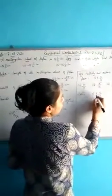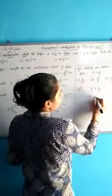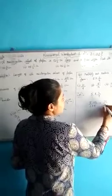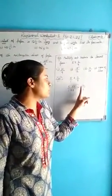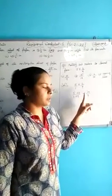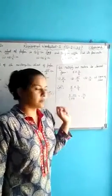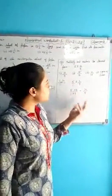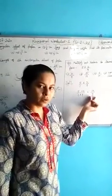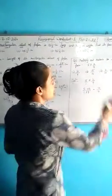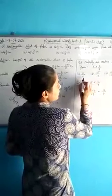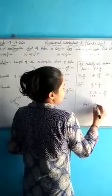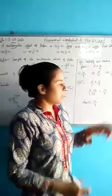So now, numerator multiplies with numerator and denominator multiplies with denominator always. 5 multiplied by 2 gives 10, divided by 9. Now to convert it to the lowest form, the numbers must be able to cancel each other, but 10 and 9 cannot be cut. So the lowest form of the given fraction is 10/9. Check which option it is — that is the first option. So we write: 10/9 is our answer.